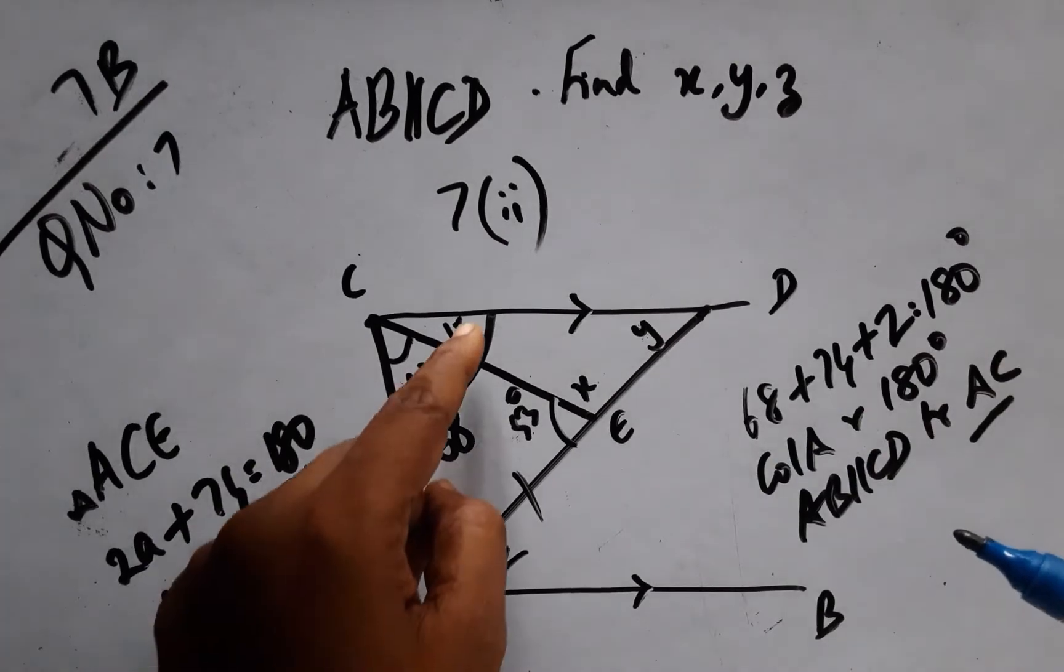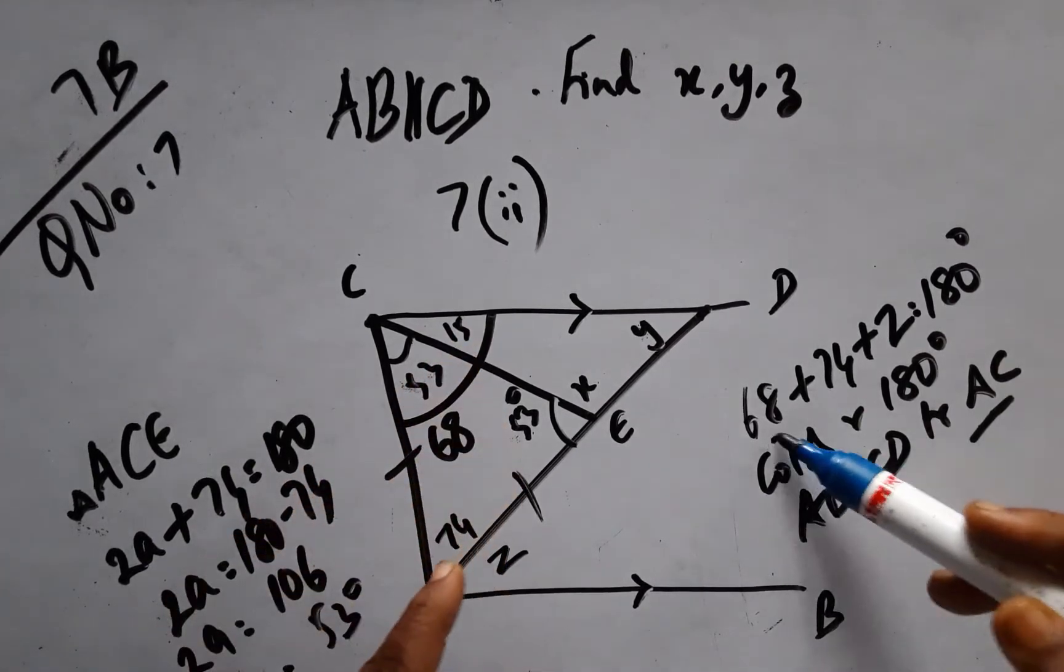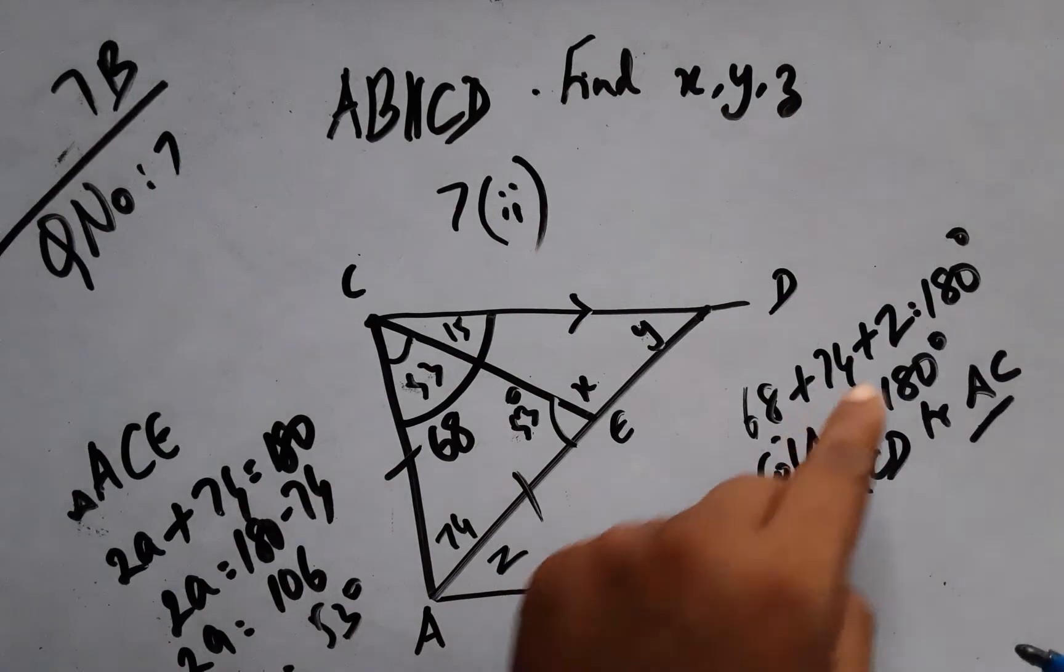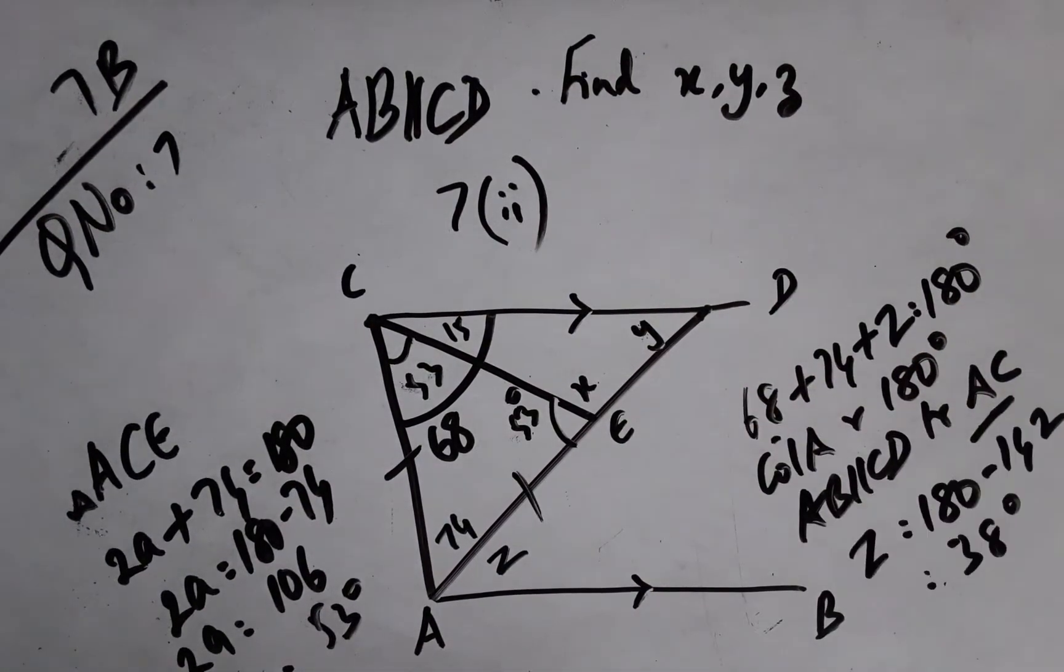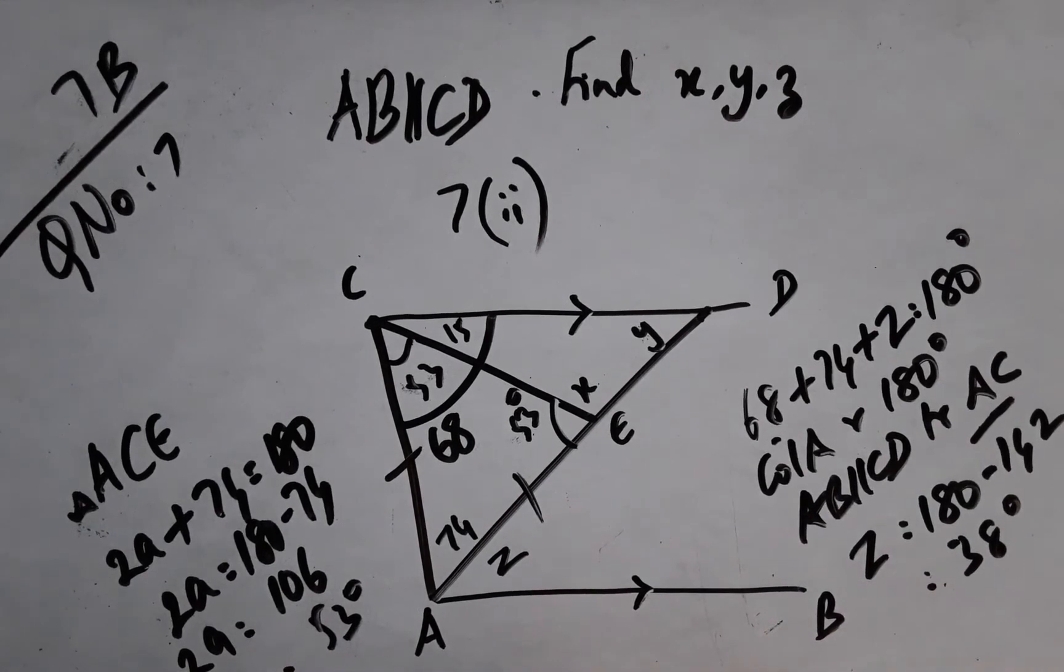Therefore, if I add 53 plus 15, it is 68, plus 74 plus Z is 180. Now my Z will be the sum of these less 180. Here I have arrived at the Z value as 38 degrees.